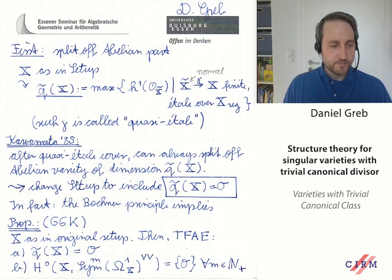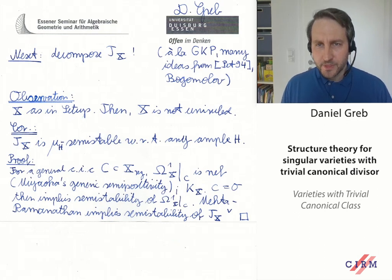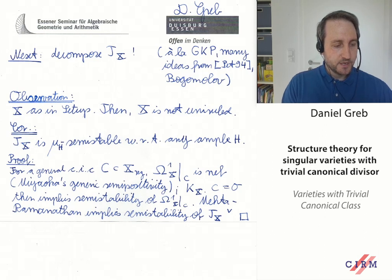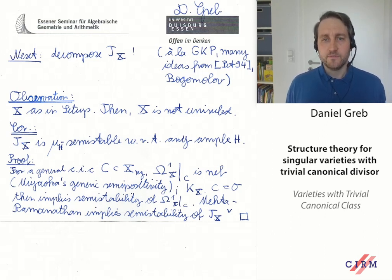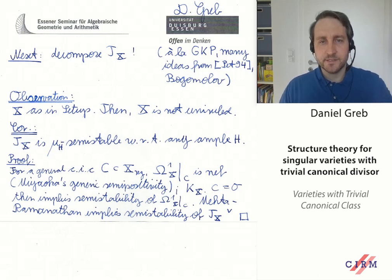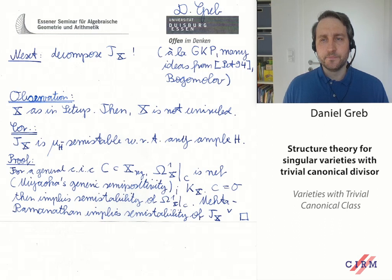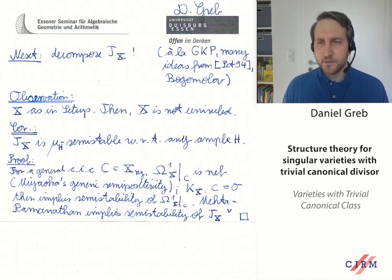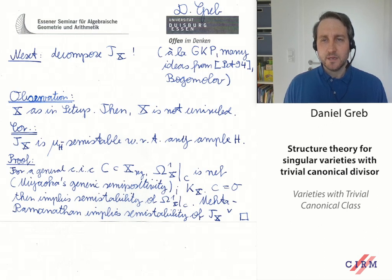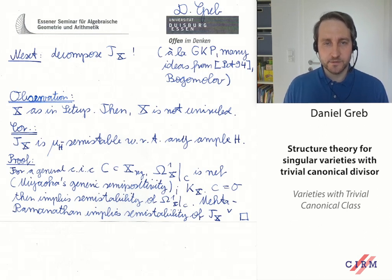Now that we've split off the abelian part, the next step is to decompose the tangent sheaf of X further. The first shadow of a decomposition of a cover, or of X itself, is a splitting of the tangent sheaf. I will explain on the next few slides some ideas that are presented in detail in my paper with Greb, Kebekus, and Peternell, which appeared in the Mori birthday conference volume. Many ideas in this paper also come from an older paper of Peternell from 1994, which in turn relies on ideas in Bogomolov's work.